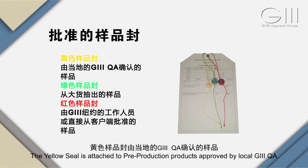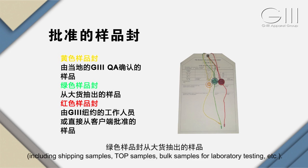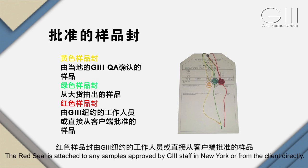批准的样品封方面，为了区别对待不同种类的确认样品，吉斯瑞实行不同颜色代码的样品封规定，分为黄、绿、红三种颜色。黄色样品封由当地的吉斯瑞QA确认的样品；绿色样品封从大货抽出的样品；红色样品封由吉斯瑞纽约工作人员或直接从客户端批准的样品。